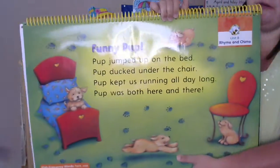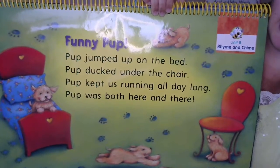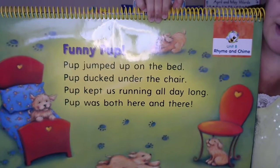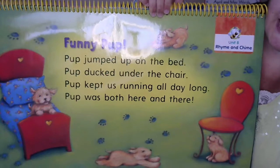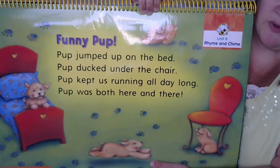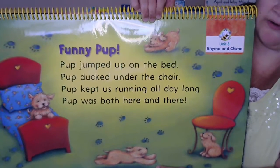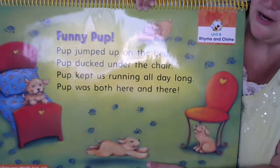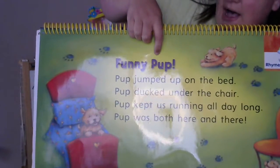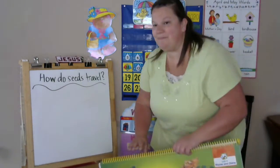I might come a little closer so you can see it too. This is called Funny Pup. Pup jumped up on the bed. Pup ducked under the chair. Pup kept us running all day long. Pup was both here and there. Now looking at those words, which one has the short U? Ugly umpire — uh. I see one word. It starts with puh puh puh — pup. Very good. That was just a little warm-up to get us started.